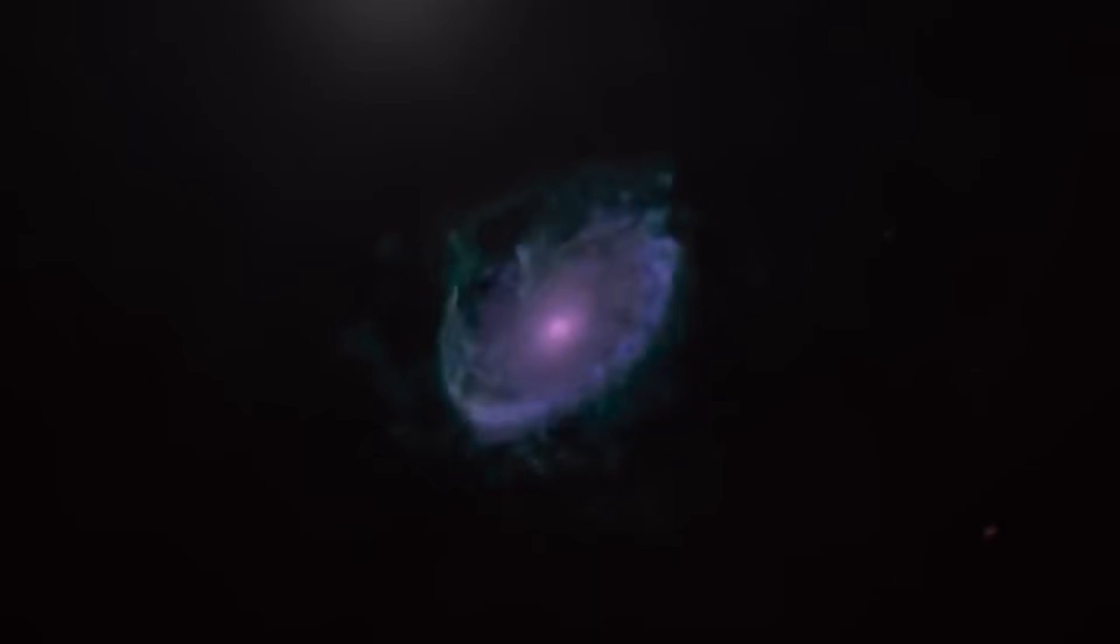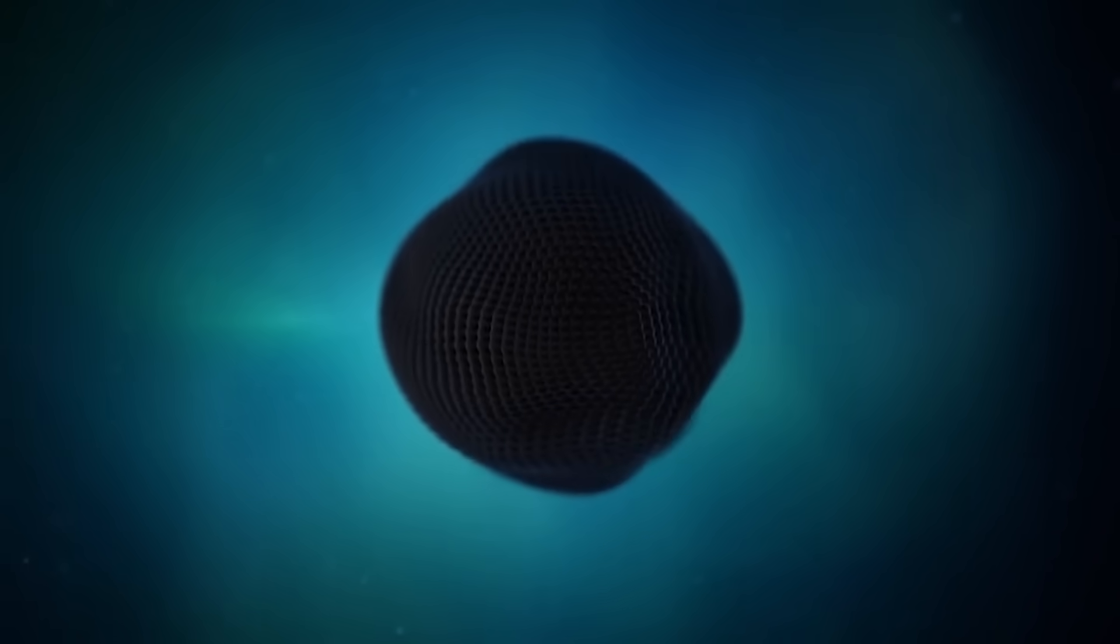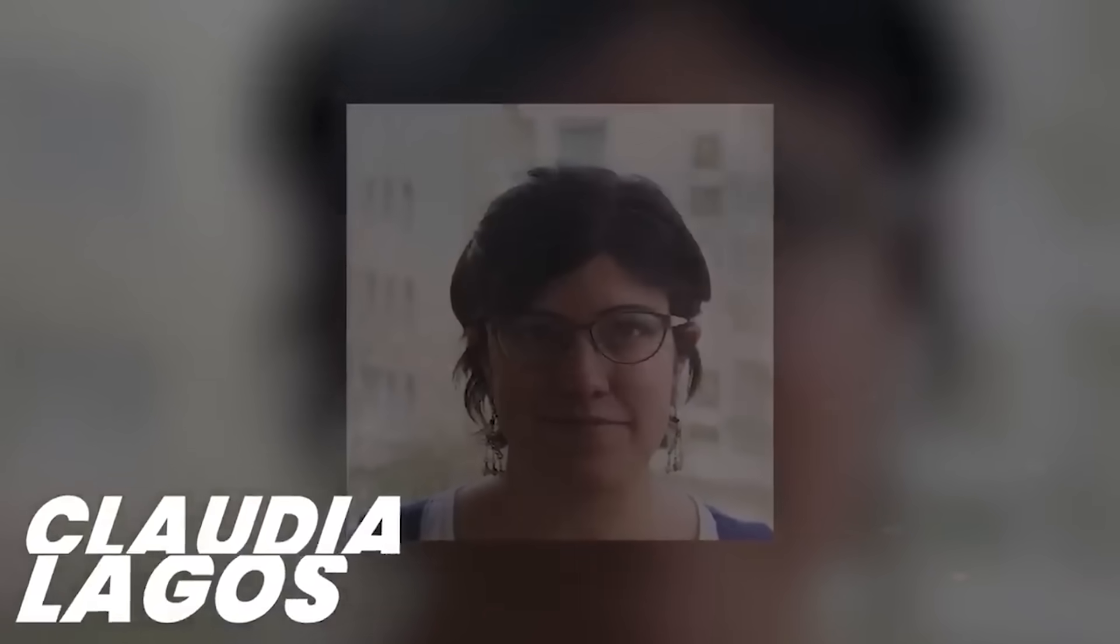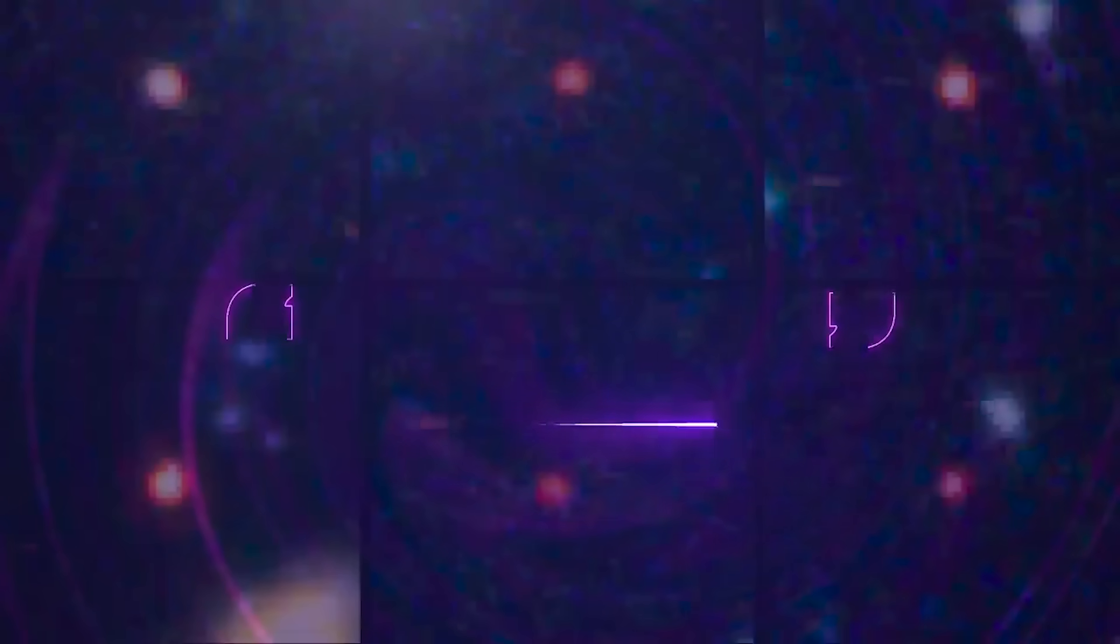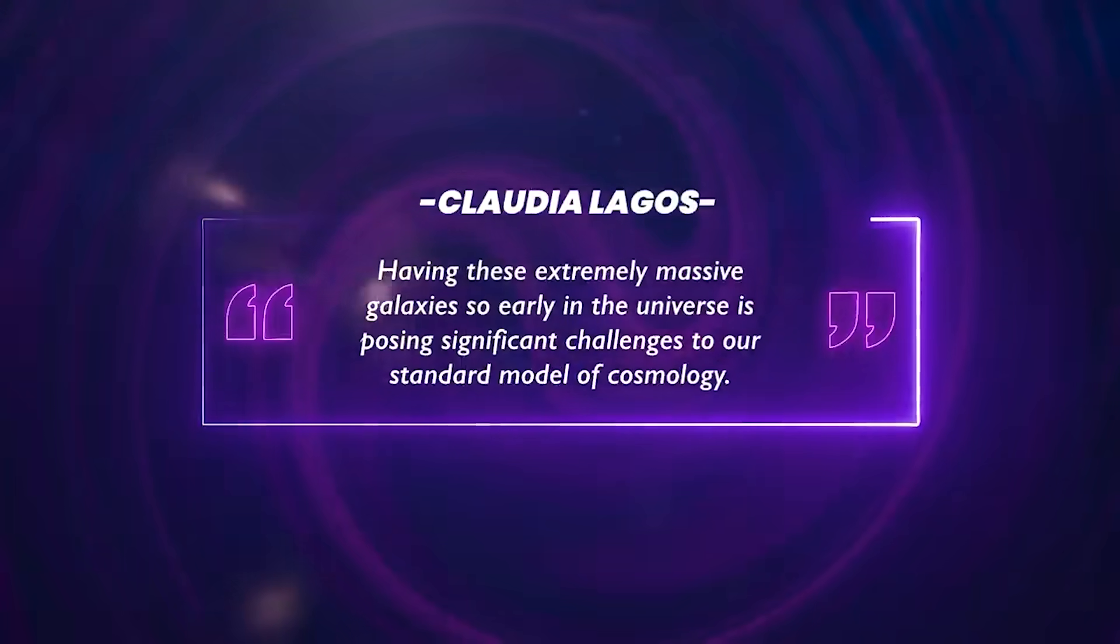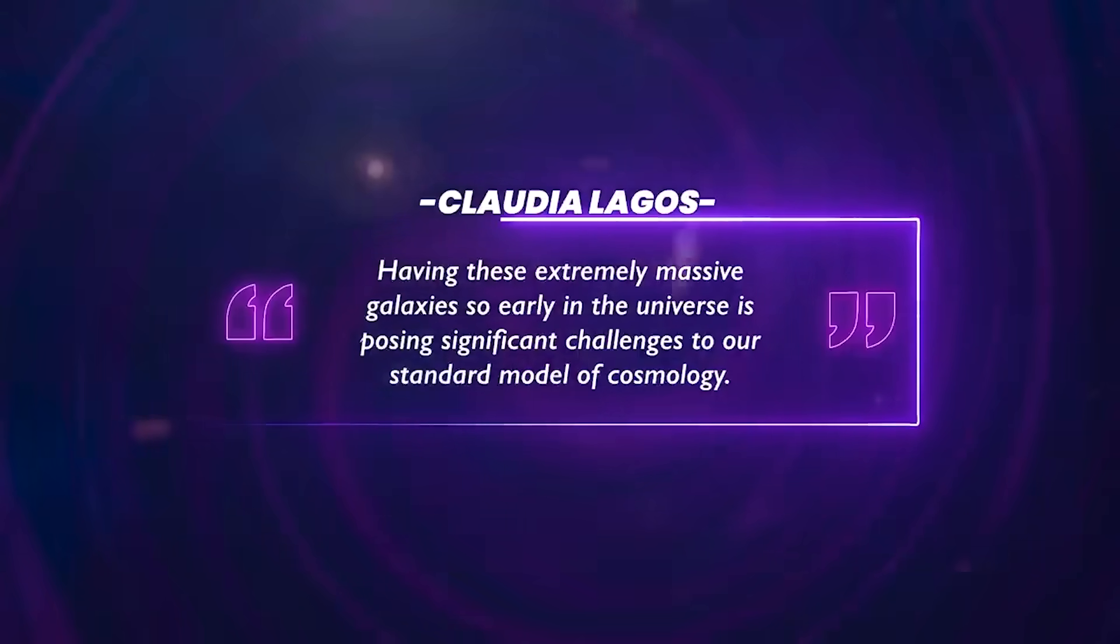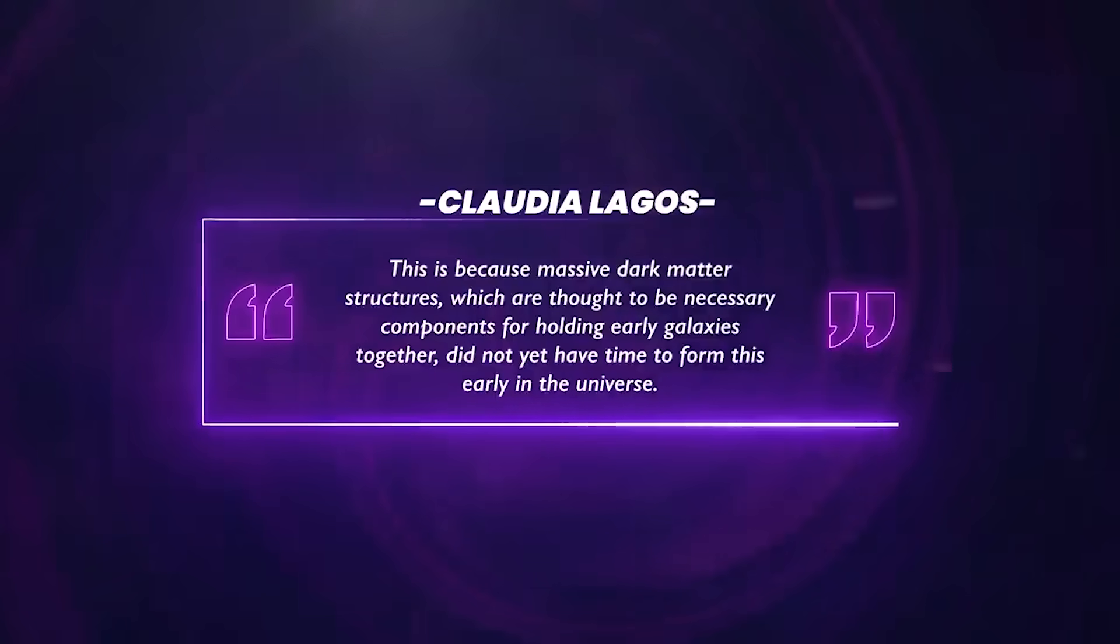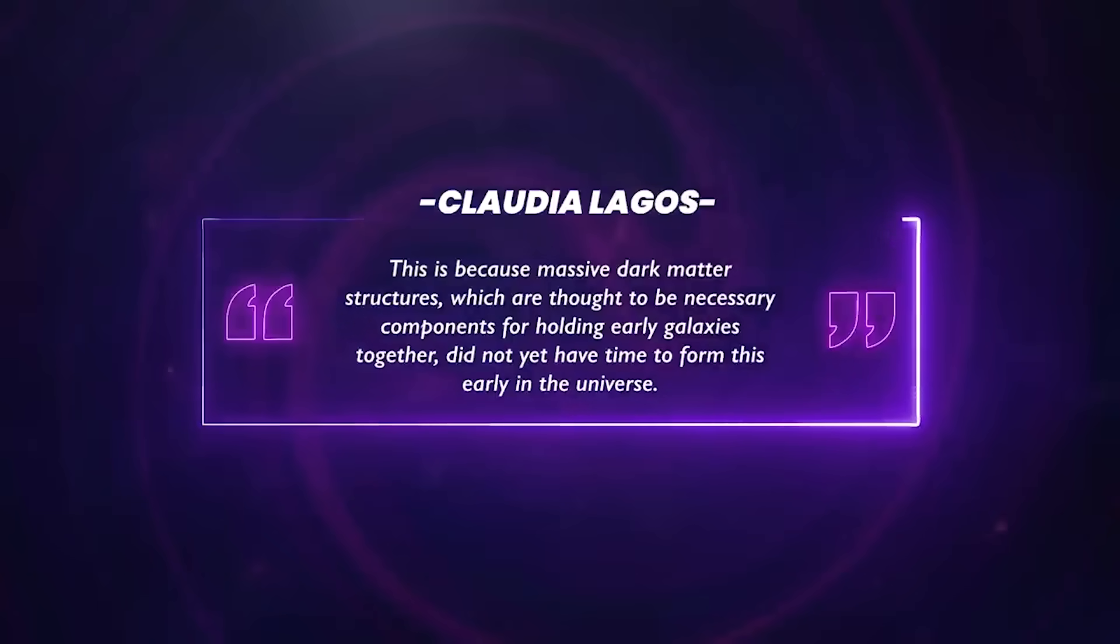Scientists are now questioning how this is possible, how a galaxy could form without enough dark matter to trigger the galaxy formation process in the early universe. Claudia Lagos, an associate professor of astronomy at the International Center for Radio Astronomy Research, says, having these extremely massive galaxies so early in the universe is posing significant challenges to our standard model of cosmology. This is because massive dark matter structures, which are thought to be necessary components for holding the early galaxies together, did not yet have time to form this early in the universe.